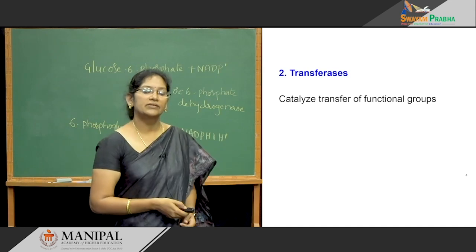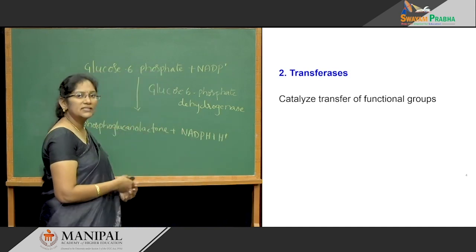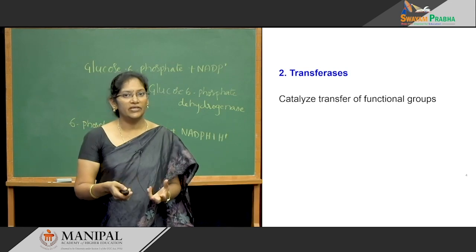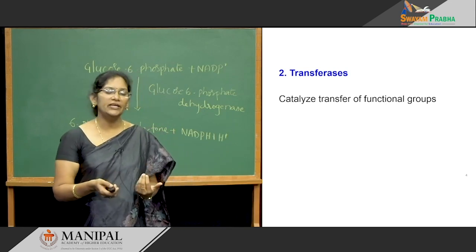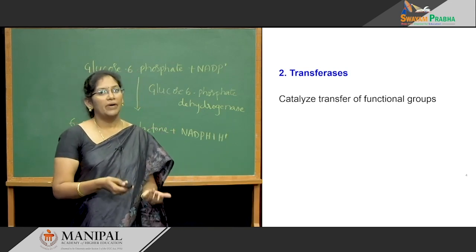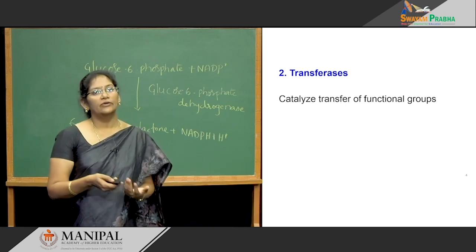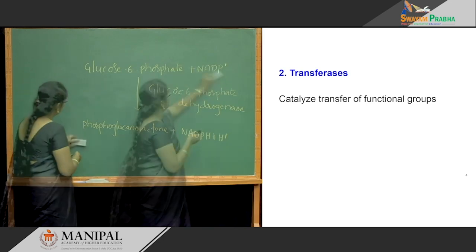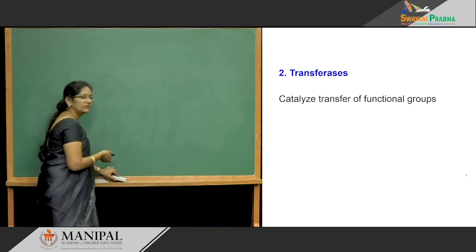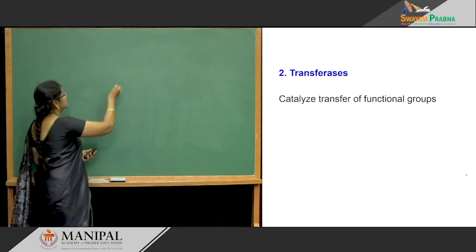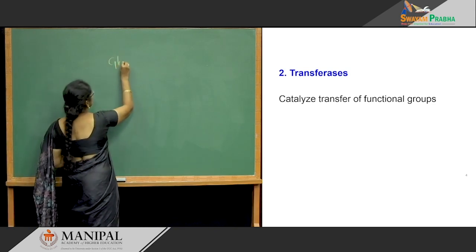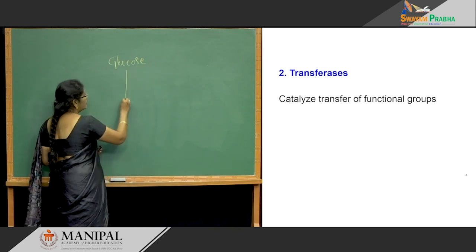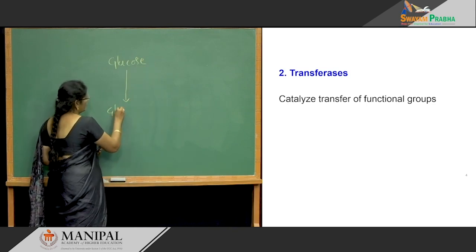Next is the transferases. What are these transferases? They are mainly catalyzing the transfer of functional groups — any functional group such as an amino group, phosphoryl group, or methyl group. For example, the first reaction of glycolysis: glucose is converted into glucose-6-phosphate.